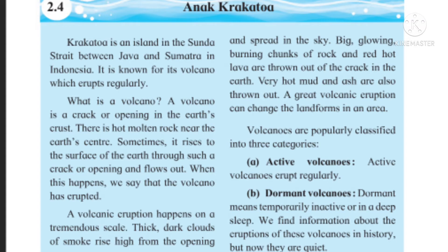Volcanoes are popularly classified into three categories. Active volcanoes erupt regularly. Dormant volcanoes are temporarily inactive or in a deep sleep — we find information about the eruptions of these volcanoes in history, but now they are quiet. Extinct volcanoes — geographers can guess by looking at the rock formation that they used to erupt long, long ago, but there is no record of it in history. An extinct volcano is unlikely to erupt again.